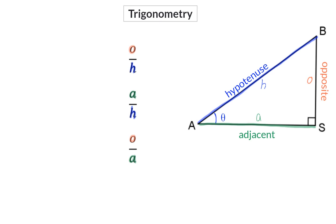Each one of these ratio combinations has been given a name. That name is linked to the angle from which we are working. The first ratio of opposite over hypotenuse is called the sine ratio, or sine theta. The adjacent over hypotenuse ratio is called the cosine ratio, or cos theta. And the opposite over adjacent ratio is called the tangent, or tan theta ratio.